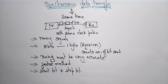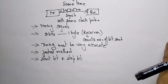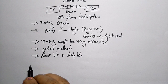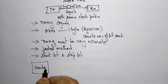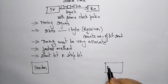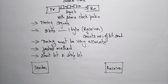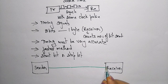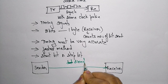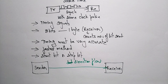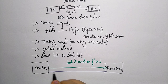Here you can see that the sender is sending data. This is the sender and here is the receiver. The data flows in this direction. The bits will be sent from the sender to the receiver: 1, 0, 1, 0, 1, 1, 0, 1, 1, 1, 0, 0 — like that. After eight bits, one byte is complete.